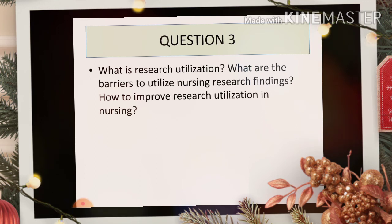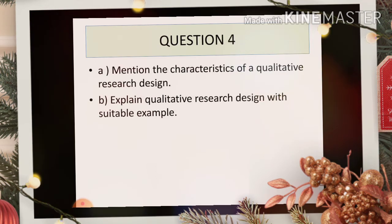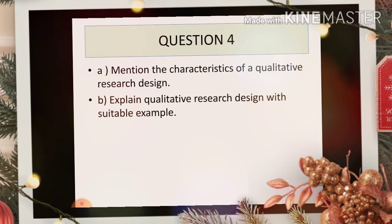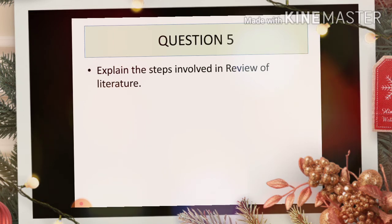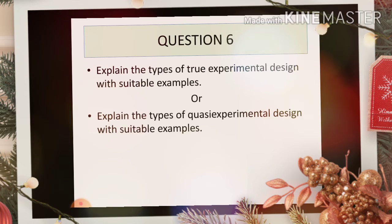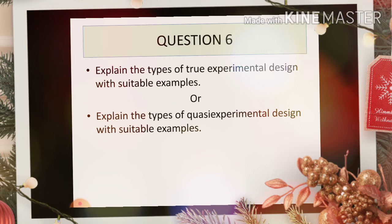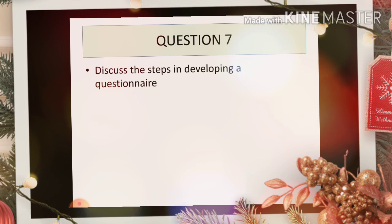Question number four: mention the characteristics of a qualitative research design and explain qualitative research design with suitable examples. Question number five: explain the steps involved in review of literature. Question number six: explain the types of true experimental design with suitable examples, or explain the types of quasi-experimental design with suitable examples.